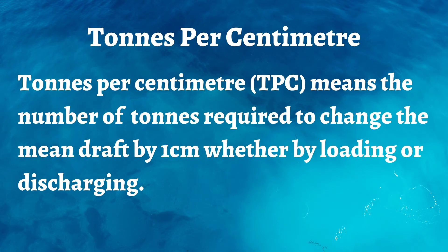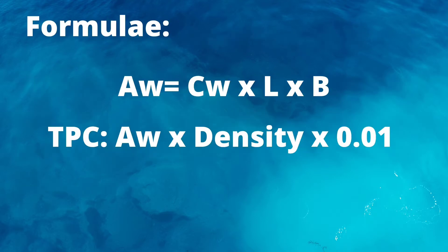Tons per centimeter means the number of tons required to change the mean draft by one centimeter, whether by loading or discharging cargo. The formula for this is Aw times density times 0.01, but you have to find the Aw first.